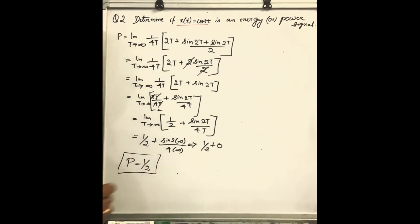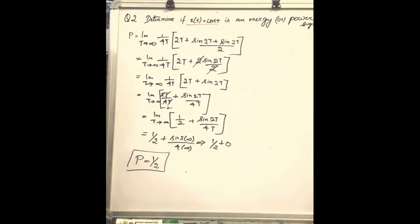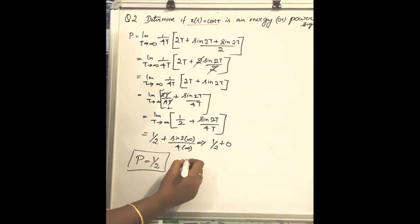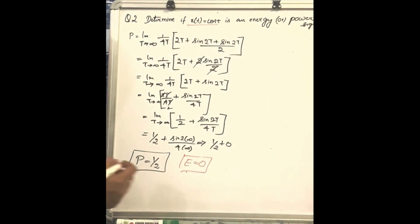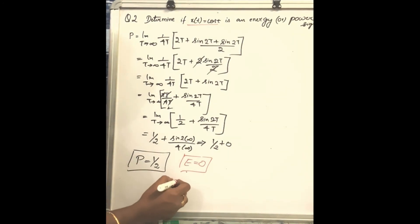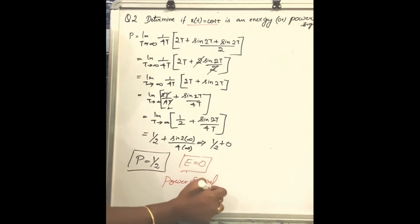So the power and energy for x(t) = cos(t) are: energy E equals infinity and power P equals 1/2. Since energy is infinite and power is finite and non-zero, this signal is a power signal.